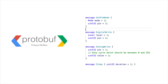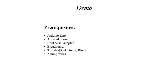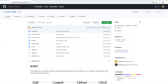The last instruction is sleep, which simply delays the execution of the Arduino program on the board. If you want to follow along with Ashraf, you need to prepare the following materials: an Arduino Uno, an Android phone, a USB serial adapter, a breadboard, three LEDs of different colors — maybe red, green, and blue — and seven jumper wires.